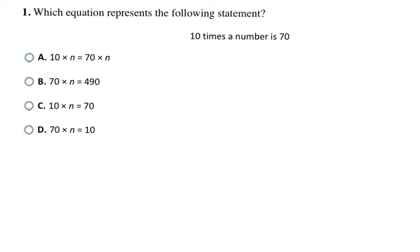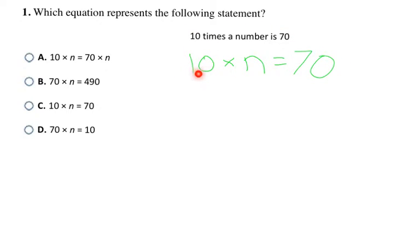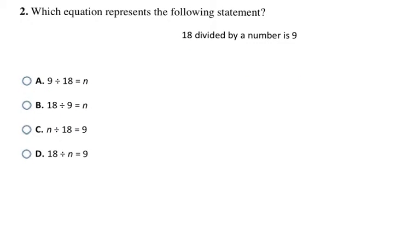This first problem gives us a sentence to translate into an equation: '10 is 10, times — that's multiplication — a number.' Looking at the answer choices, they use the letter n to represent a number. 'Is' means an equal sign, and 70 is 70. So the equation is 10 × n = 70, making my final answer C.